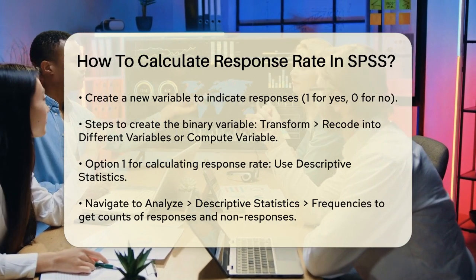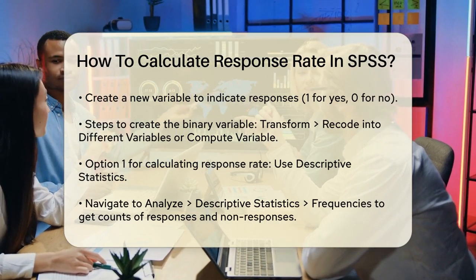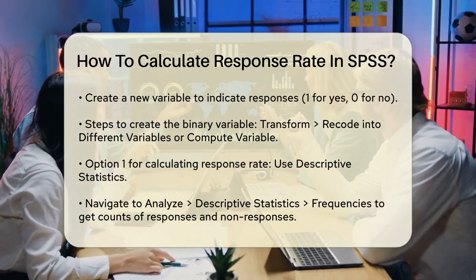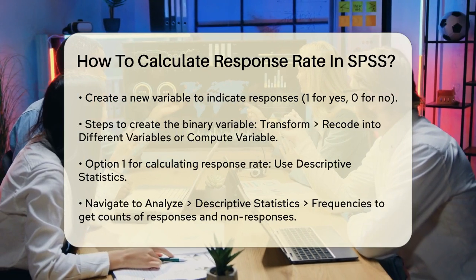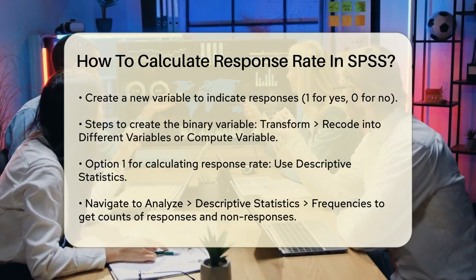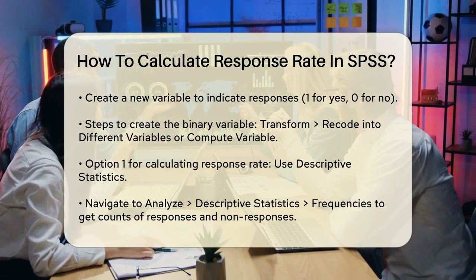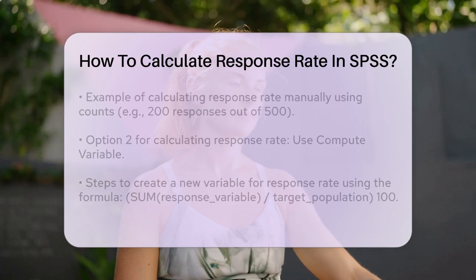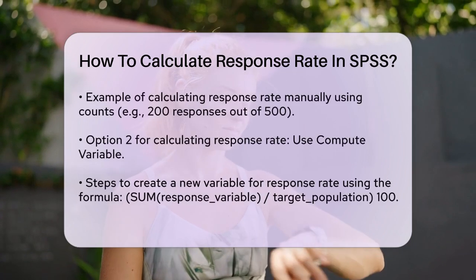For example, if you see 200 responses out of a possible 500, you can manually calculate the response rate.